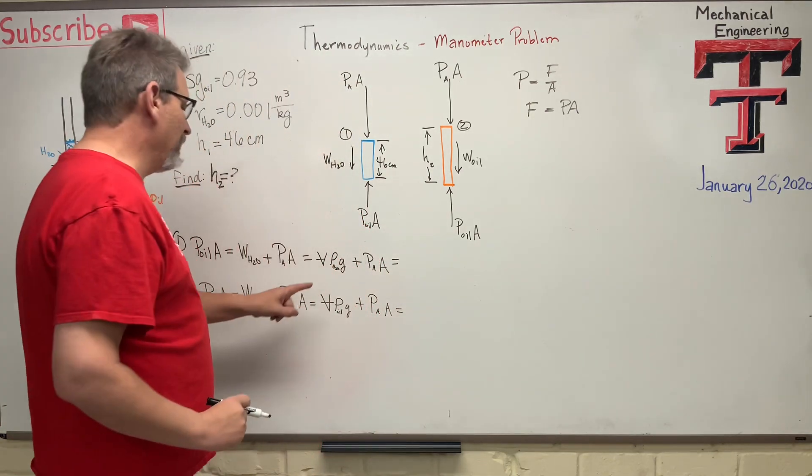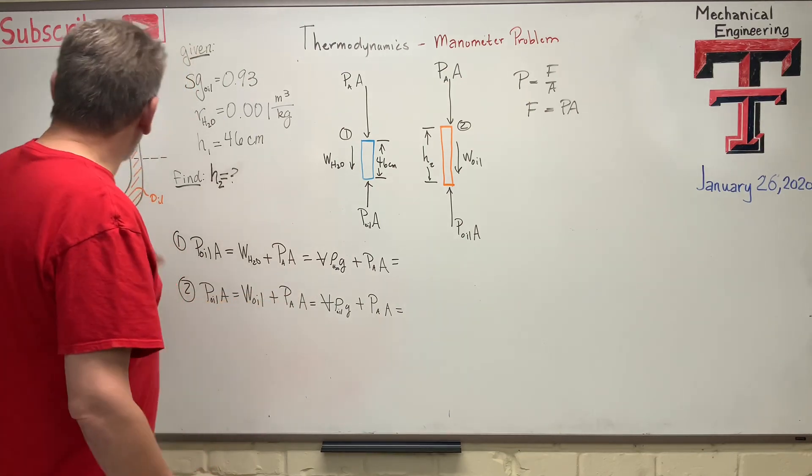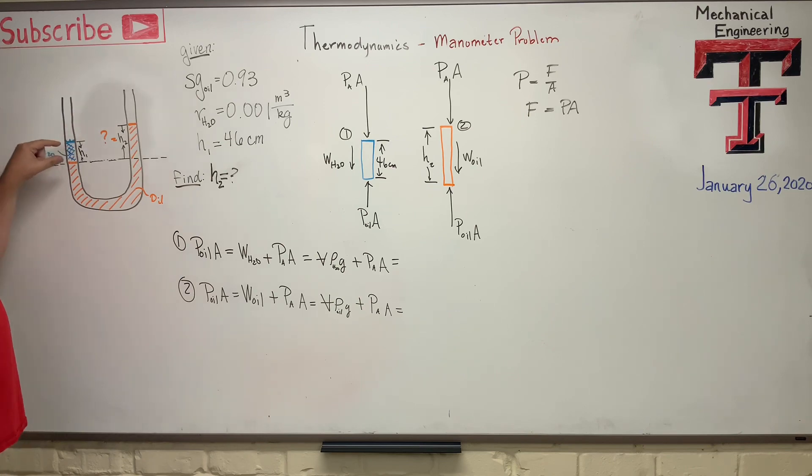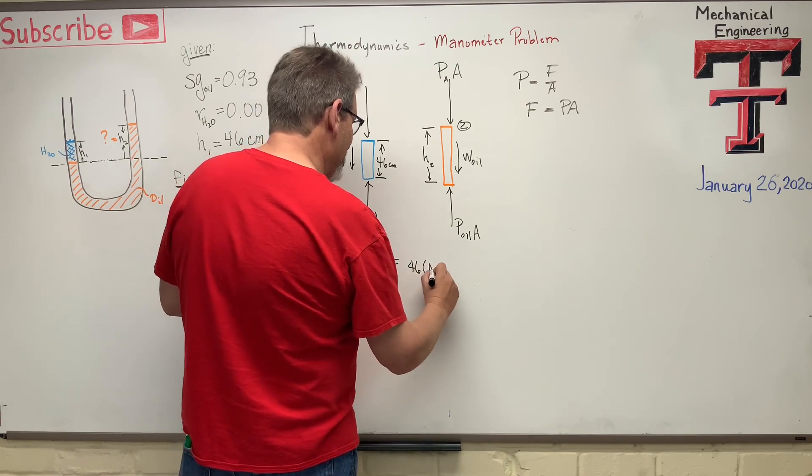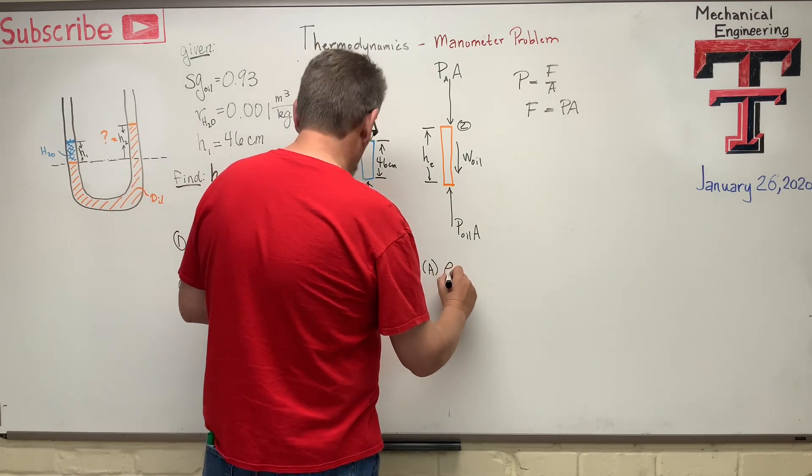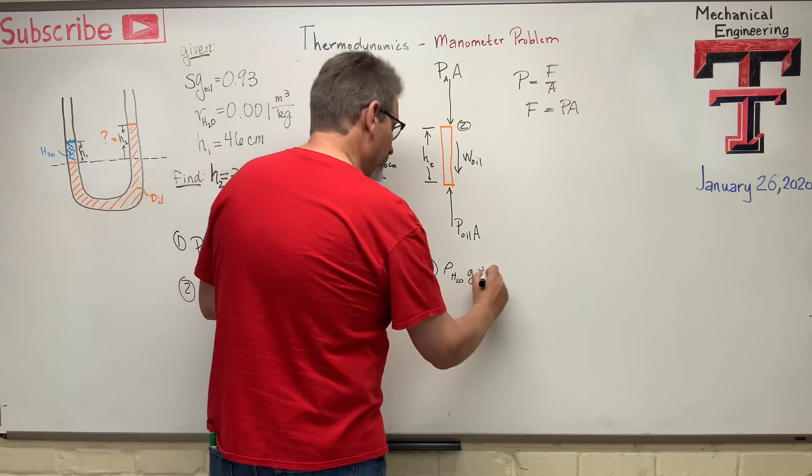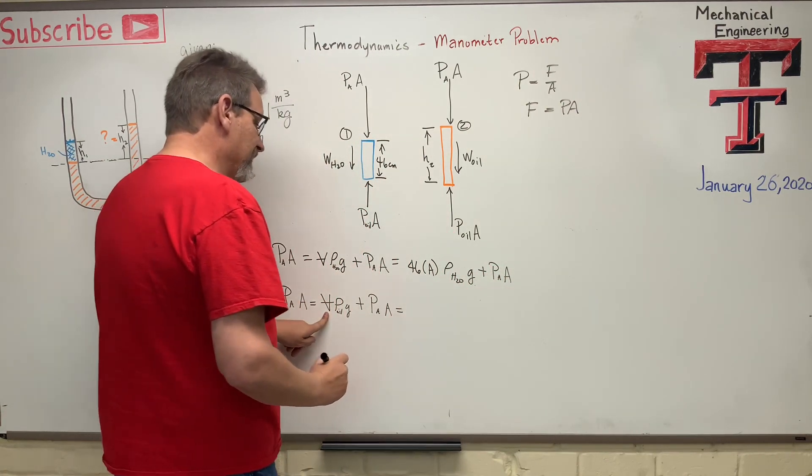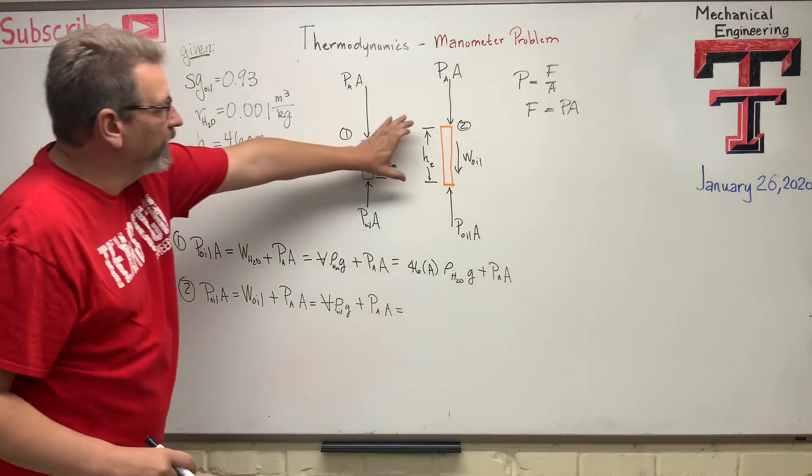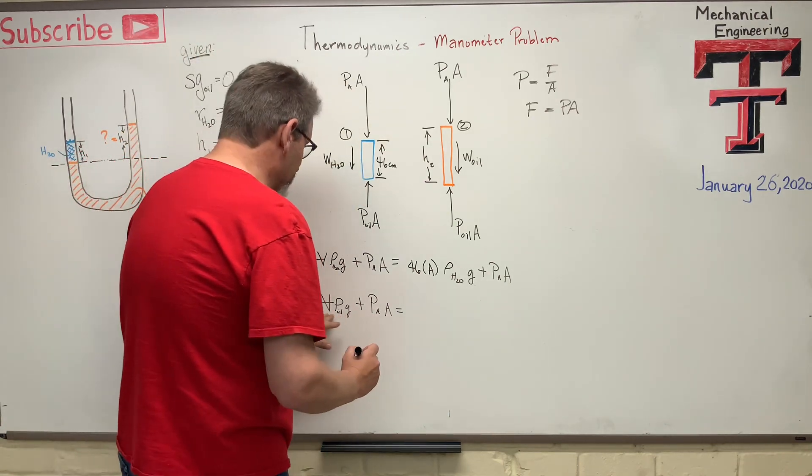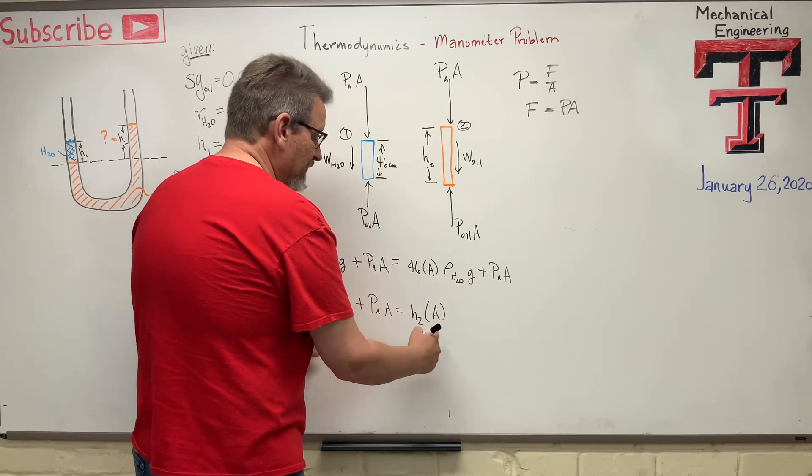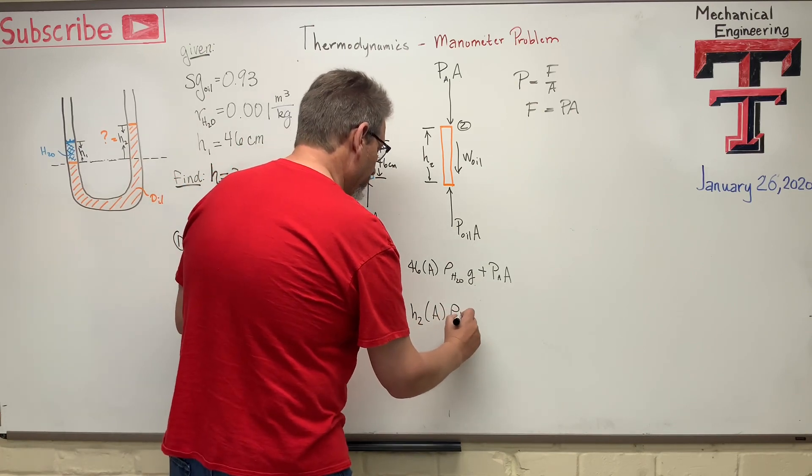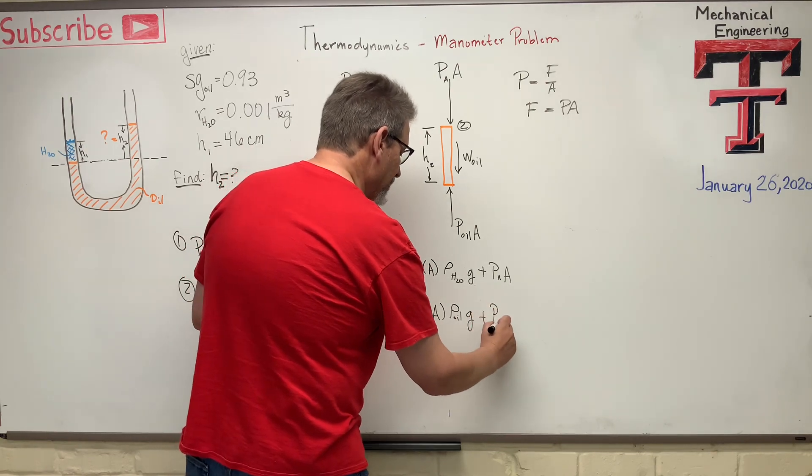Let's rewrite that one more time. What can we do with this? What's volume? Well, volume is area times the height, right? So that's a little cylinder of water. So the area of the circle times the height is the volume. And so I can change this guy to, for this guy, it's going to be 46 times A, right? Times rho H2O times G plus PA times A. And for this guy, same thing. But I don't know the height on this one. So there's my little cylinder of water here, or cylinder of oil, rather. And so let's see if we can solve this guy. This guy is going to be H2 times A again, right? Height times the area times rho oil times G plus PA times A.